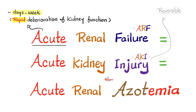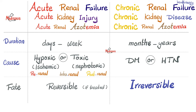Acute renal failure is the same as acute kidney injury, the same as acute renal insufficiency, or acute renal azotemia. Why acute? Because there is rapid deterioration of kidney function within days or weeks. Why do you call it injury? Because for the most part, it is reversible. We compared acute renal failure and chronic renal failure in the previous video.